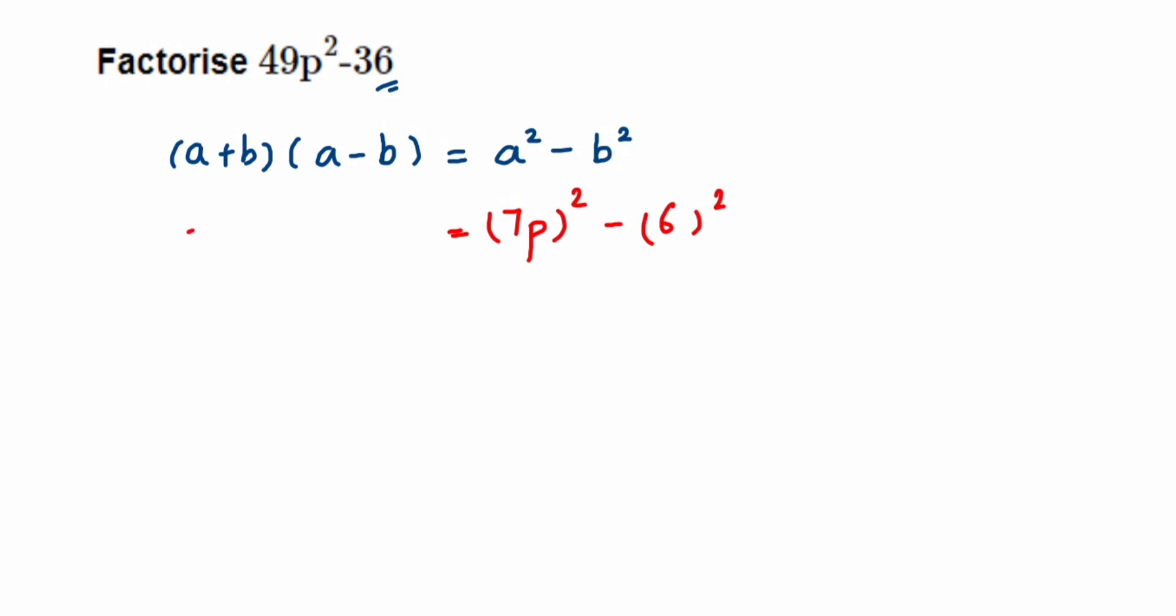That's it, this is the answer. Therefore, we can write 49p² - 36 = (7p + 6)(7p - 6). So we have used the identity to solve this question.